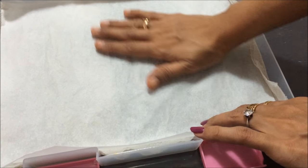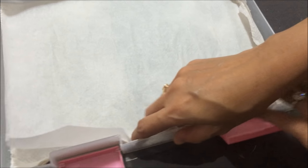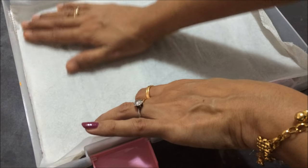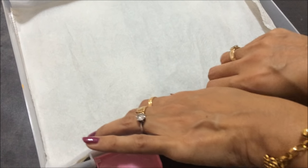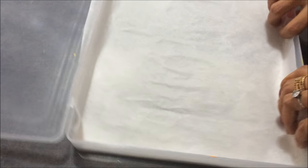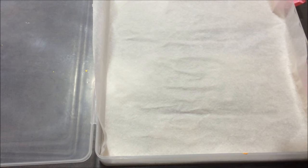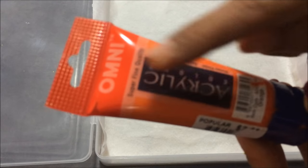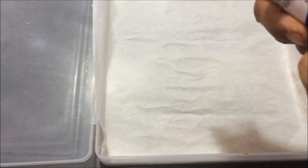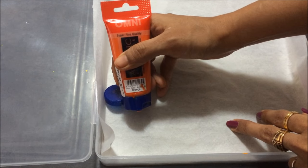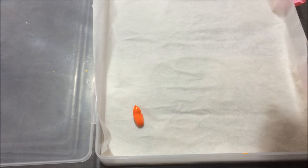For wet palette, I use plastic box container and inside I kept wet kitchen towel, and on top of it I kept parchment paper or baking paper, sometimes called wax paper. Trust me, it kept my acrylic paint wet till next day. Isn't it amazing?